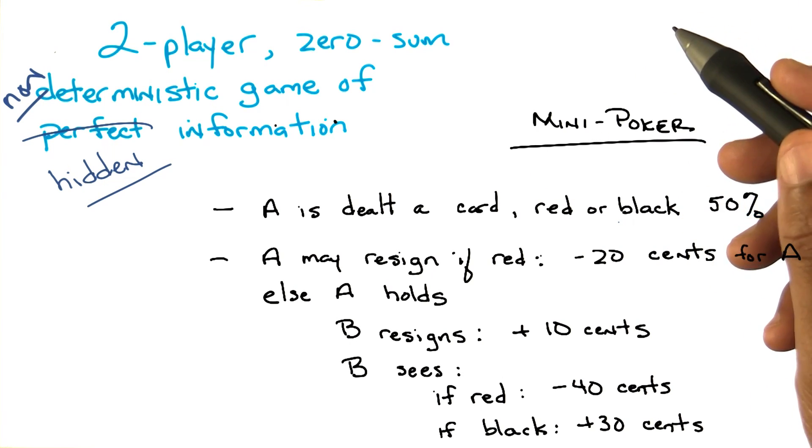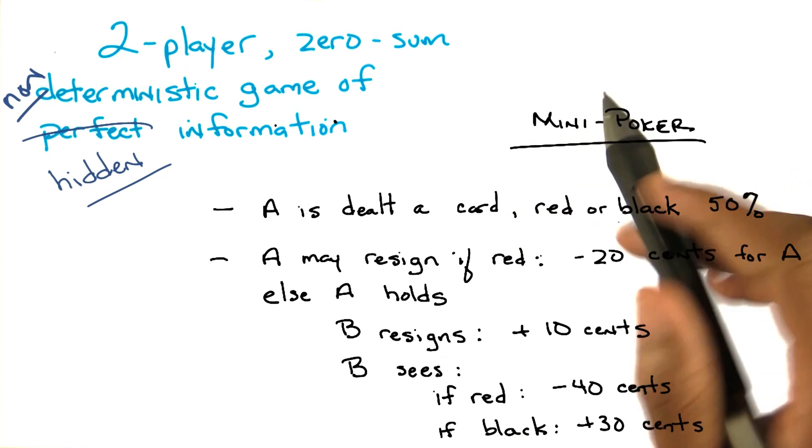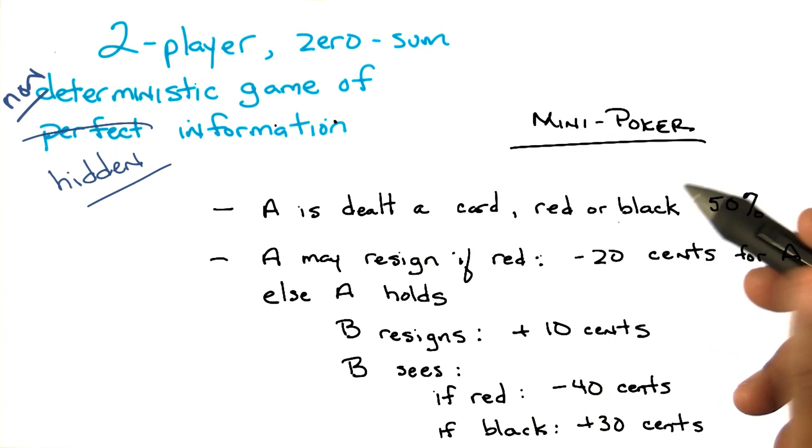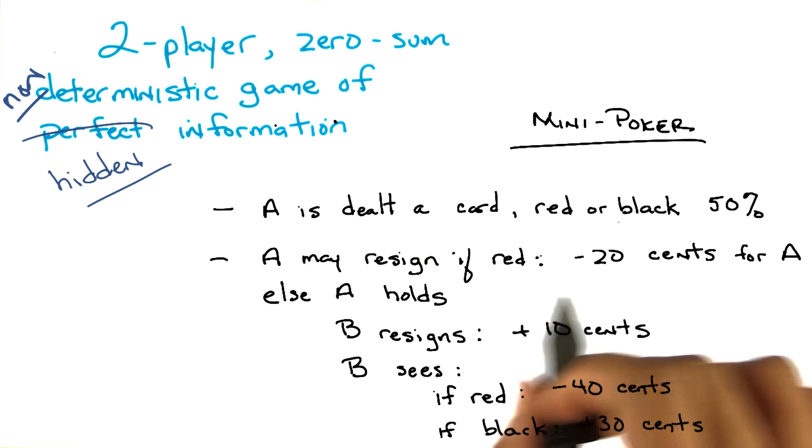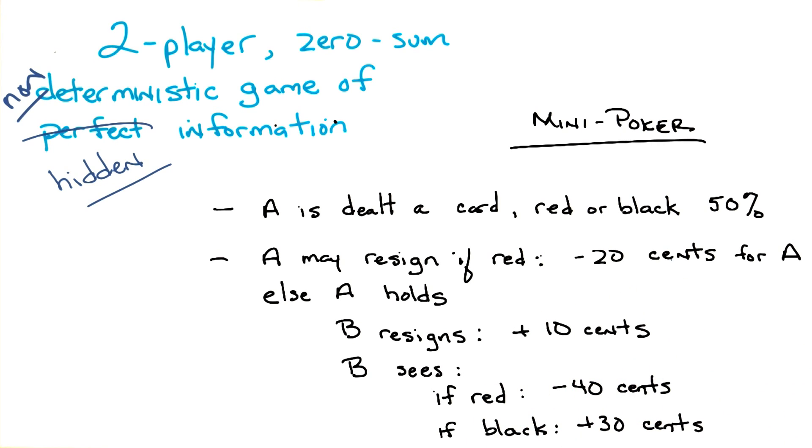Now, A gets this card, B, player B, does not get to see the card. A can choose to either resign or to hold. If A resigns, given a red card, then he loses 20 cents, okay? So, A is dealt a red. A may resign if, but only if red. And then A loses 20 cents. Okay, so this is a betting game. It's not strange, it makes perfect sense. It's sort of a metaphor for life.